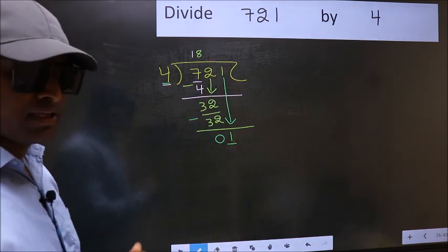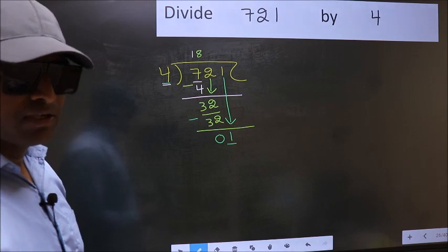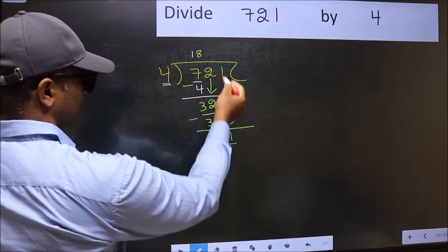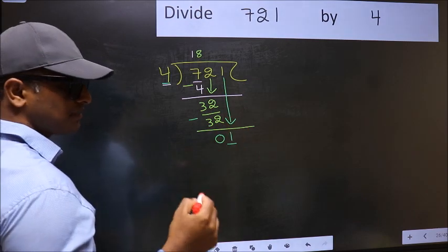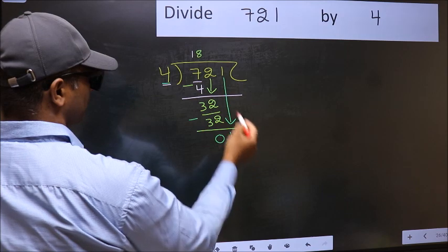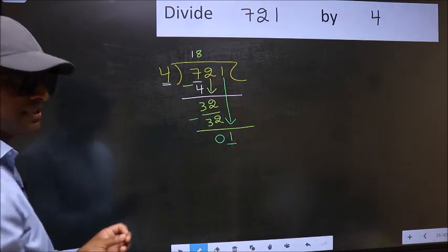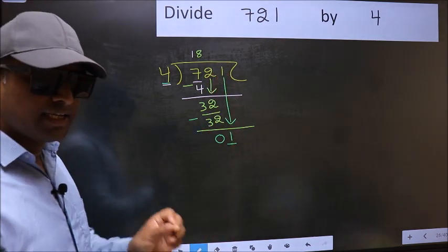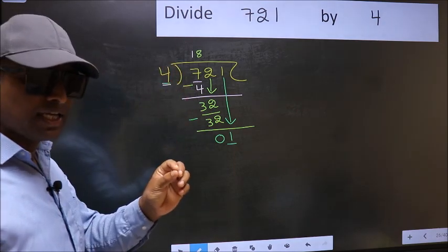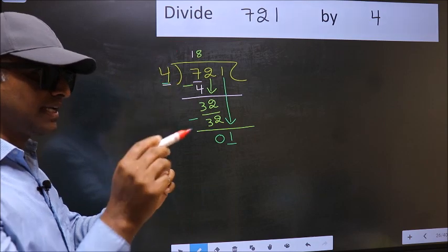Why is it wrong? Because just now you brought this number down, and in the same step you want to put a dot and take zero. Bringing the number down and also putting a dot and taking zero, both at the same step, you are not supposed to do.